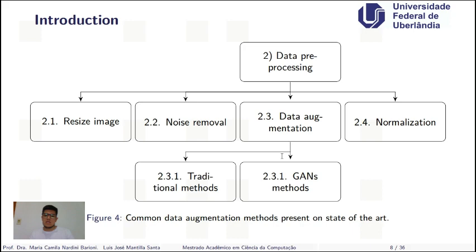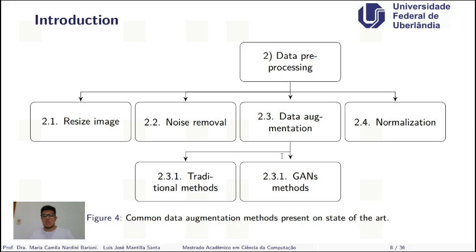This proposal is focused on data preprocessing. We have many tasks for this step: resize imaging, noise removal, data augmentation, and normalization. We will focus on this step because it generates data that we can use to train neural network architectures. Under this context, the most important task is data augmentation. We have two approaches: the first is traditional methods, and the second is the GAN approach.